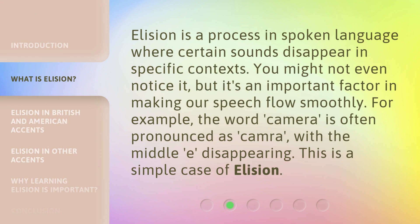Elision is a process in spoken language where certain sounds disappear in specific contexts. You might not even notice it, but it's an important factor in making our speech flow smoothly. For example, the word 'camera' is often pronounced as 'cam'ra', with the middle 'e' disappearing. This is a simple case of elision.